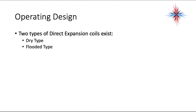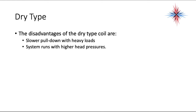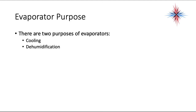There are two types of direct expansion coils: dry type and flooded type. The dry type uses 25% less refrigerant than the flooded type, has more vapor in the evaporator, and has less chance of flood back to the compressor. The dry type is the primary type of coil we see. The disadvantages of the dry type are a slower pull-down with heavy loads and the system runs with higher head pressures.